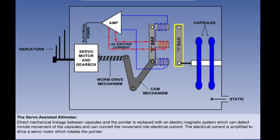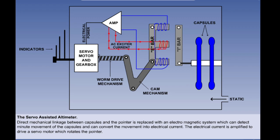We can see here in diagrammatic form how this is achieved. Movement of the capsules is transmitted to a pivoted bar known as an I-bar. Opposite the I-bar is an E-shaped bar. The E-bar has coils wound around each leg. The coils on the outer legs are wound in opposite directions, which causes them to be 180 degrees out of phase with each other. AC current is fed to the middle leg which sets up an alternating magnetic field in the outer legs. When the gap between the I-bar and the legs of the E-bar is equidistant, the magnetic fields generated are equal and opposite and cancel each other out, so no current will flow in the circuit.